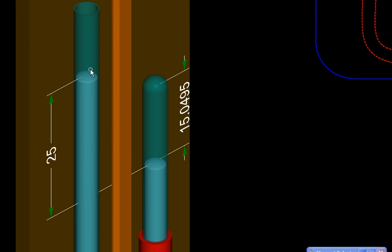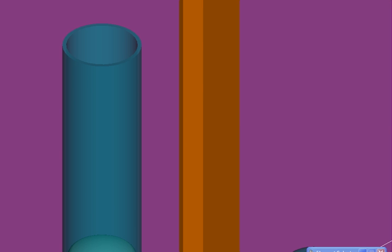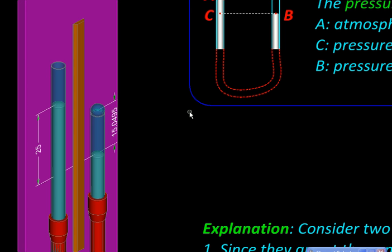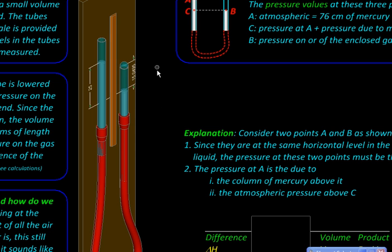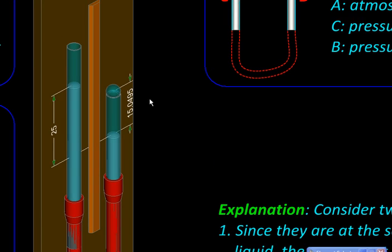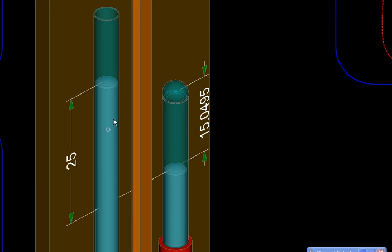It essentially consists of two glass tubes: one is closed at one end and the other is open at both ends. These two glass tubes are then connected with a flexible rubber tube like this, forming a U-tube. Then the apparatus is filled with mercury, thereby trapping some amount of air in this part of the tube.